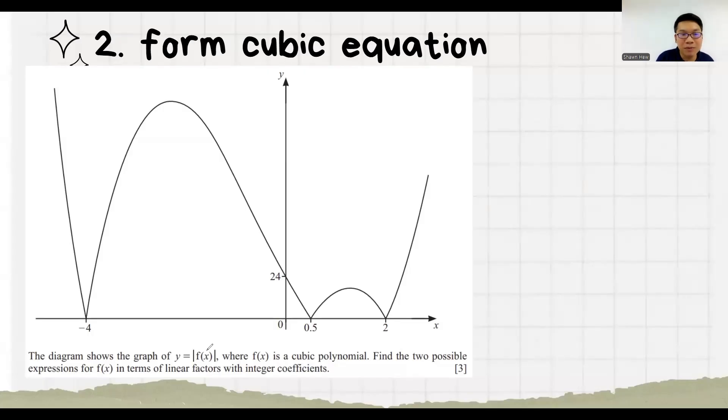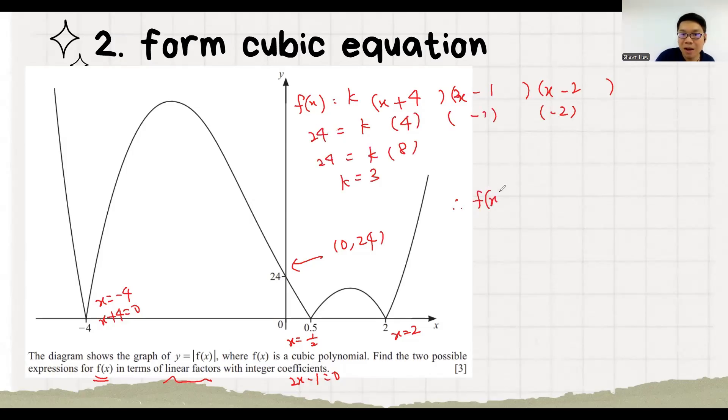One more question. They also give us a cubic polynomial. They ask you to find the 2 possible expression for fx in terms of linear factor. Linear factor means your 3 brackets must be in x power 1, cannot have x power 2. We know x equals to minus 4, x plus 4 equals to 0. X equals to 1 over 2. So 2x minus 1 equals to 0. X equals to 2. So x minus 2 equals to 0. Then again, we find the value of k by using this coordinate. Subset in. So we can confirm fx is this. But since it's a modulus graph, so initially it can be plus minus situation. Because no matter if it's positive 3 or negative 3, after modulus, it will look exactly the same like this.